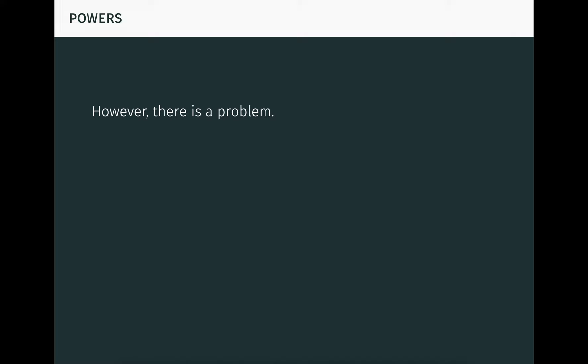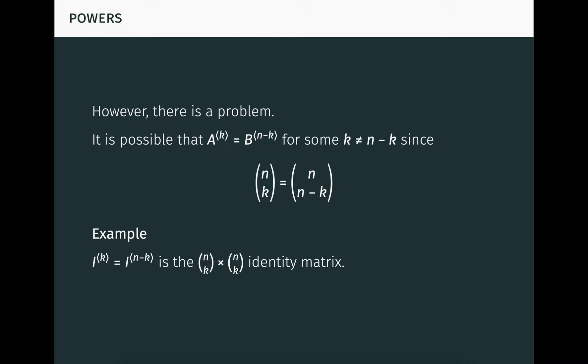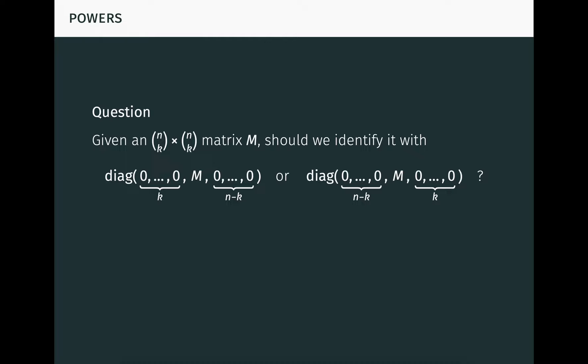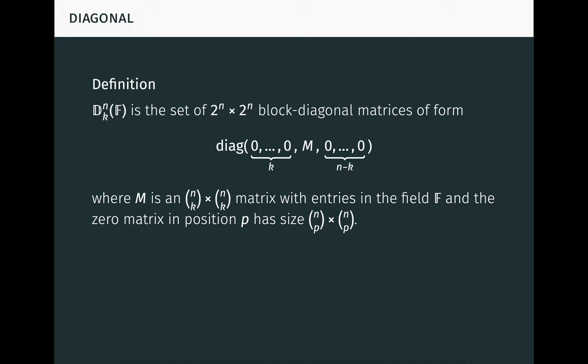However, there's one problem. It's possible for some n by n matrices A and B that A to the k equals B to the n minus k, where k is not equal to n minus k, since n choose k is always equal to n choose n minus k. For example, if we take both A and B equal to the n by n identity matrix I, then both the k-th and n minus k-th powers are equal to the n choose k by n choose k identity matrix. It's not clear how we should represent such matrices under our convention. More generally, given an arbitrary n choose k by n choose k matrix M, not necessarily a compound power, should we identify it with the block diagonal matrix on the left, where M is in position k, or with the one on the right, where M is in position n minus k. In fact, we can do both.